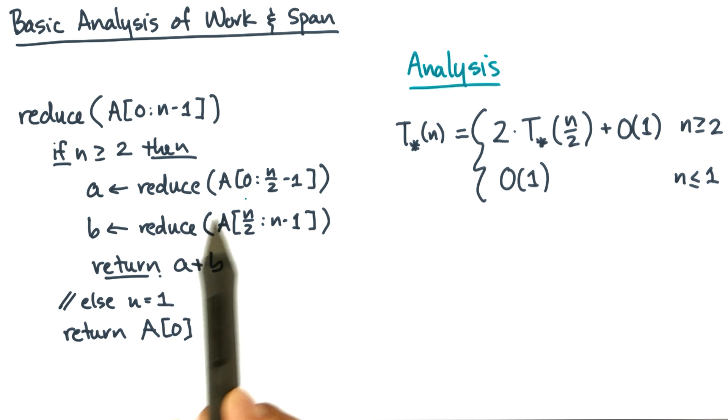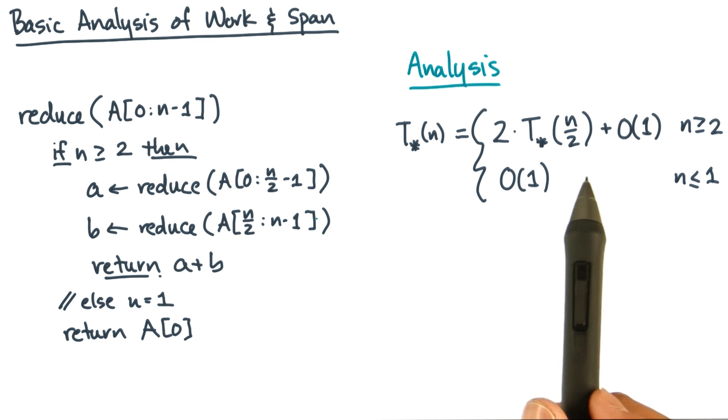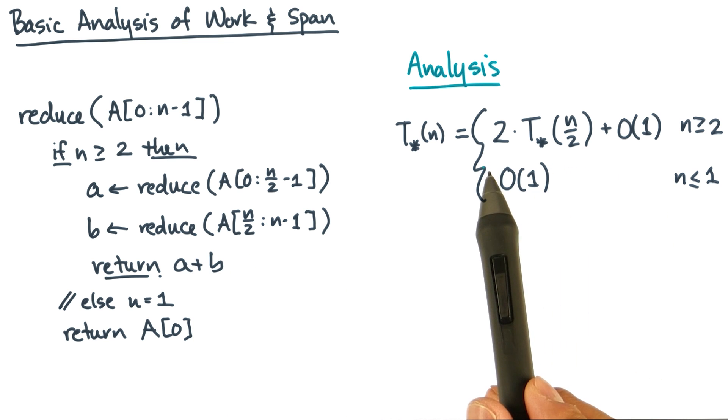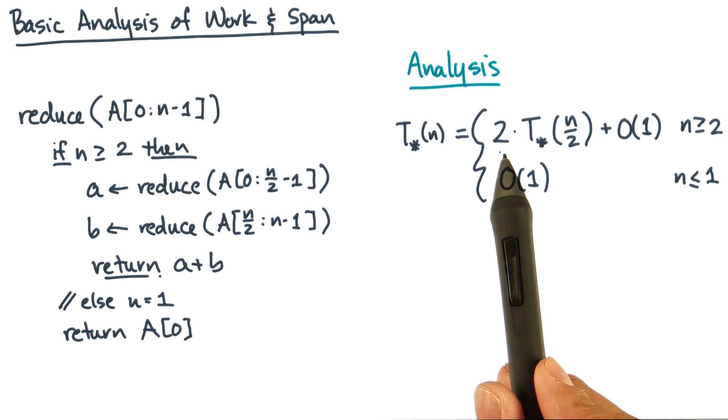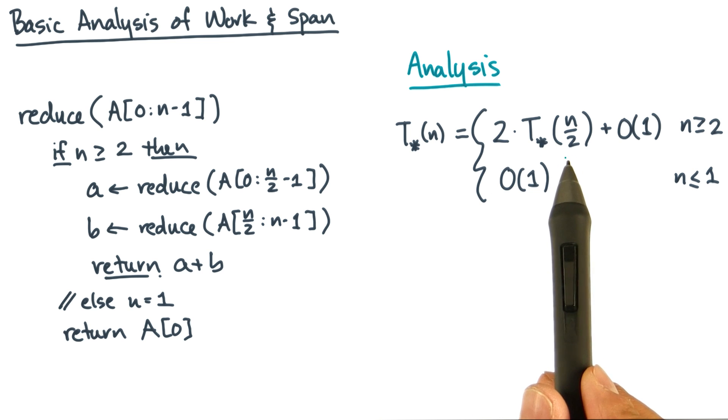So in this algorithm, we divide the work into two pieces and do recursive calls. And that translates into a recurrence that looks like this, where we solve two subproblems, each one of half the size. And you can solve this recurrence in any number of ways.